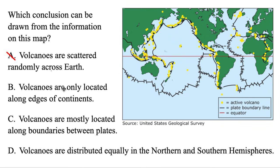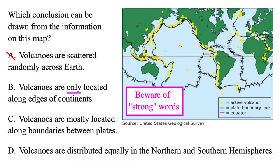The next one: volcanoes are only located along edges of continents. Beware of words that are really strong, like 'only,' because they often mean the answer is not correct. That's true for the most part over here, but then we've got a bunch in the ocean over here, so it's not always true — that one's out.